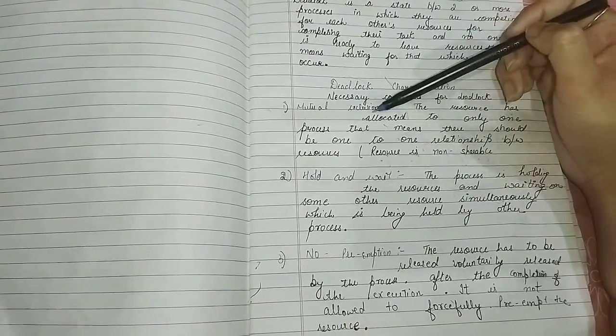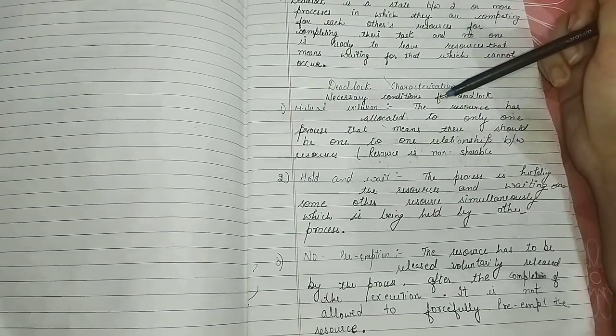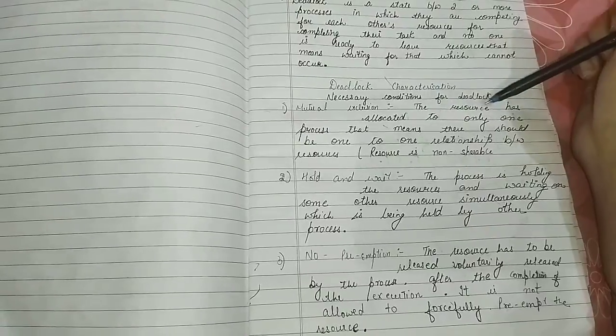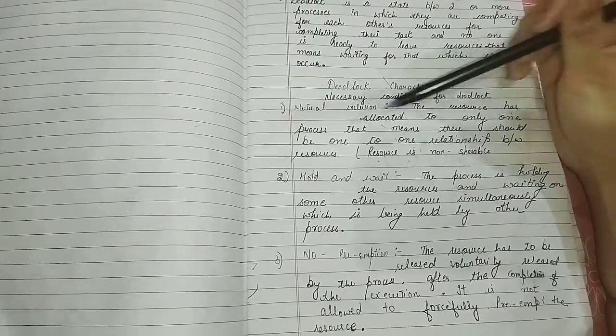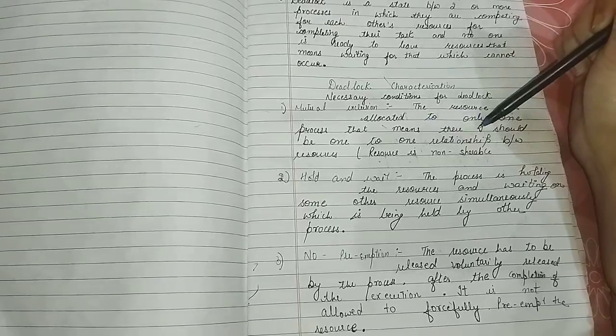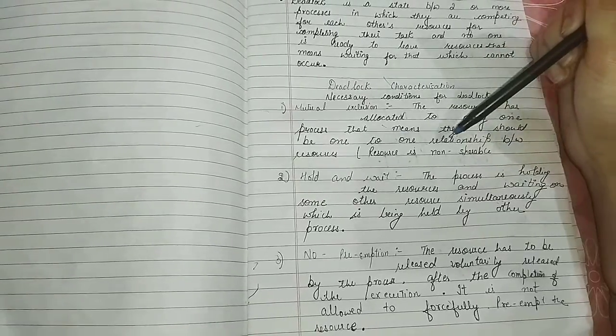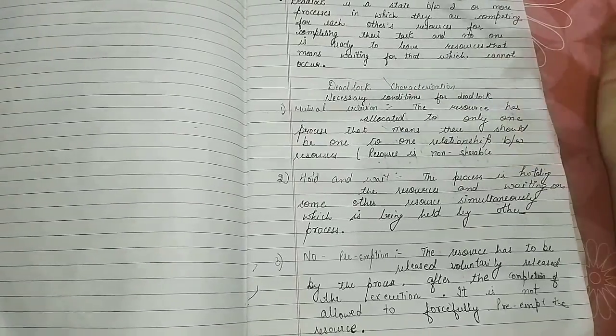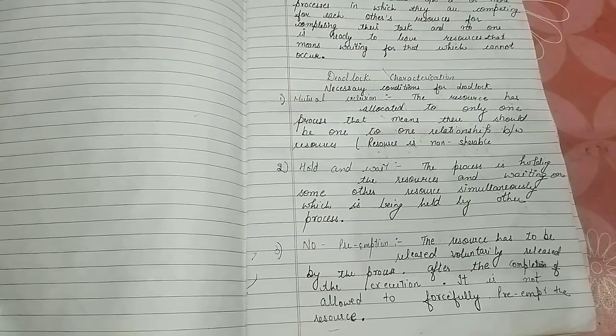Now let's look at the first mutual exclusion. What is in the mutual exclusion? The resources has allocated to the only one process. That means there should be one to one relationship between the resources. That means resources are non-shareable.